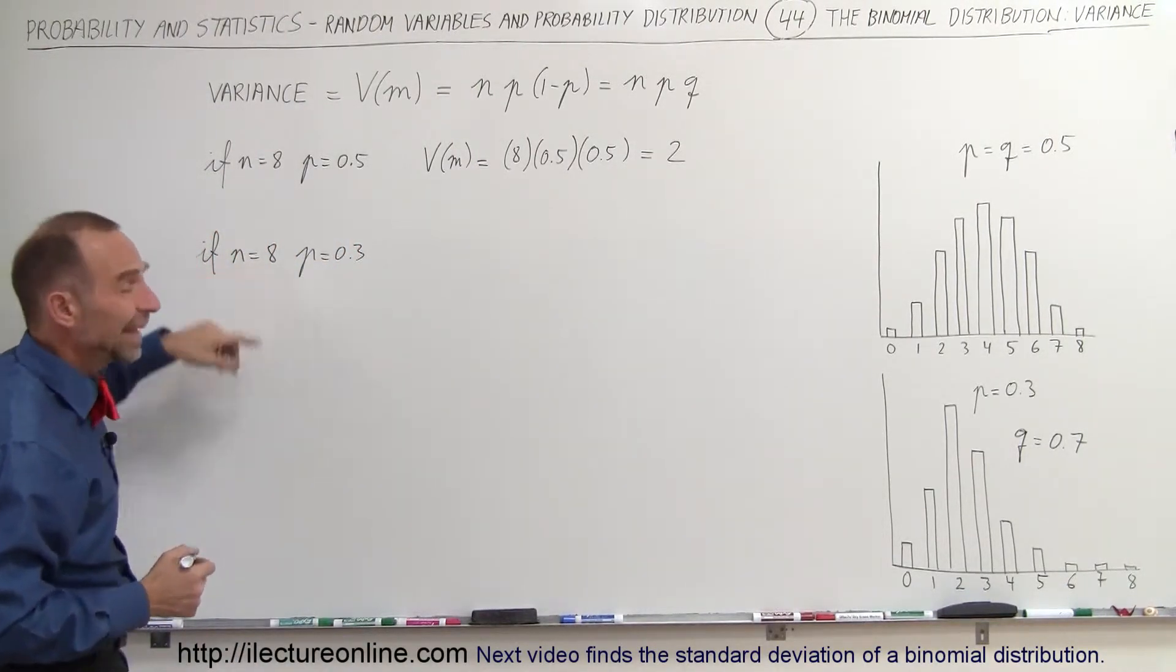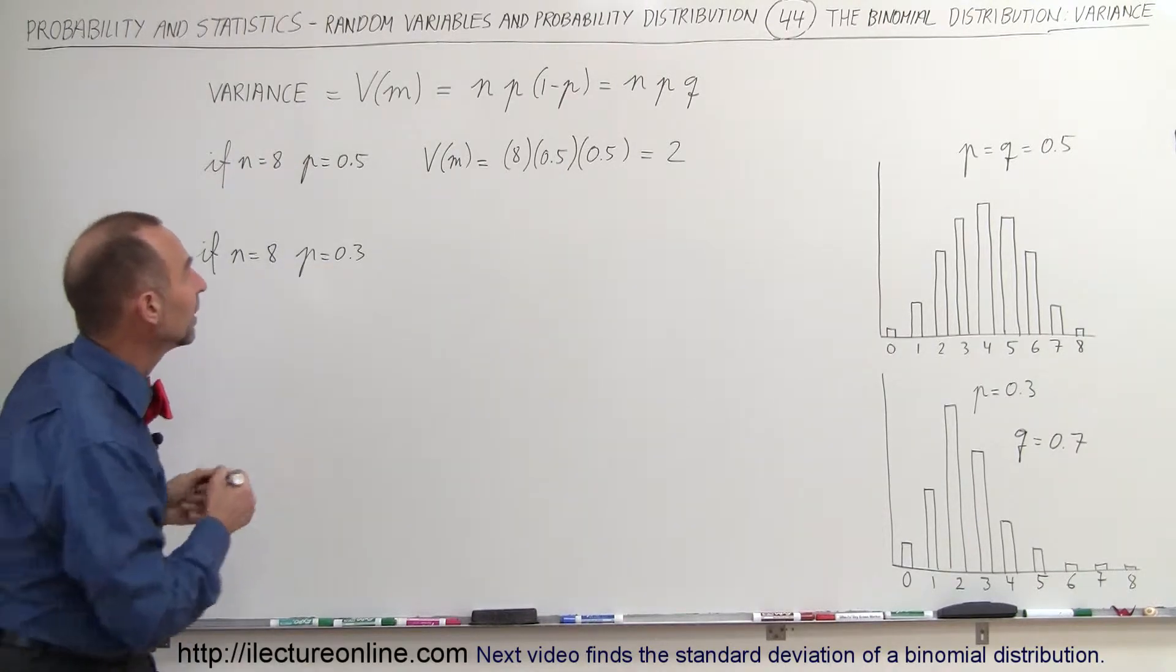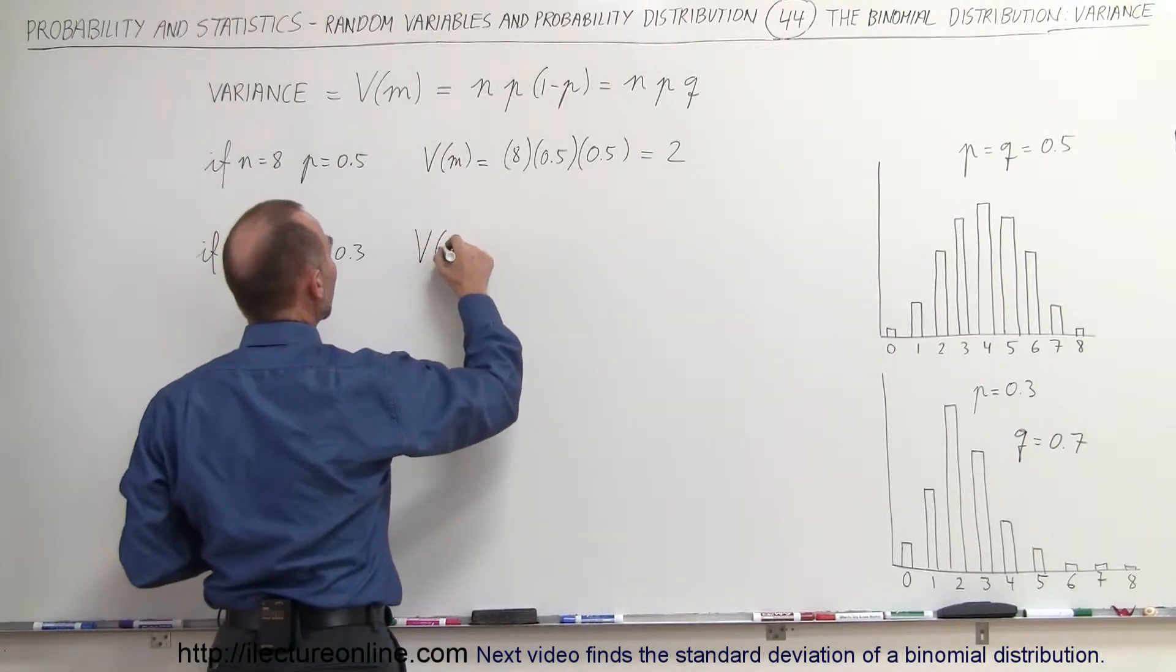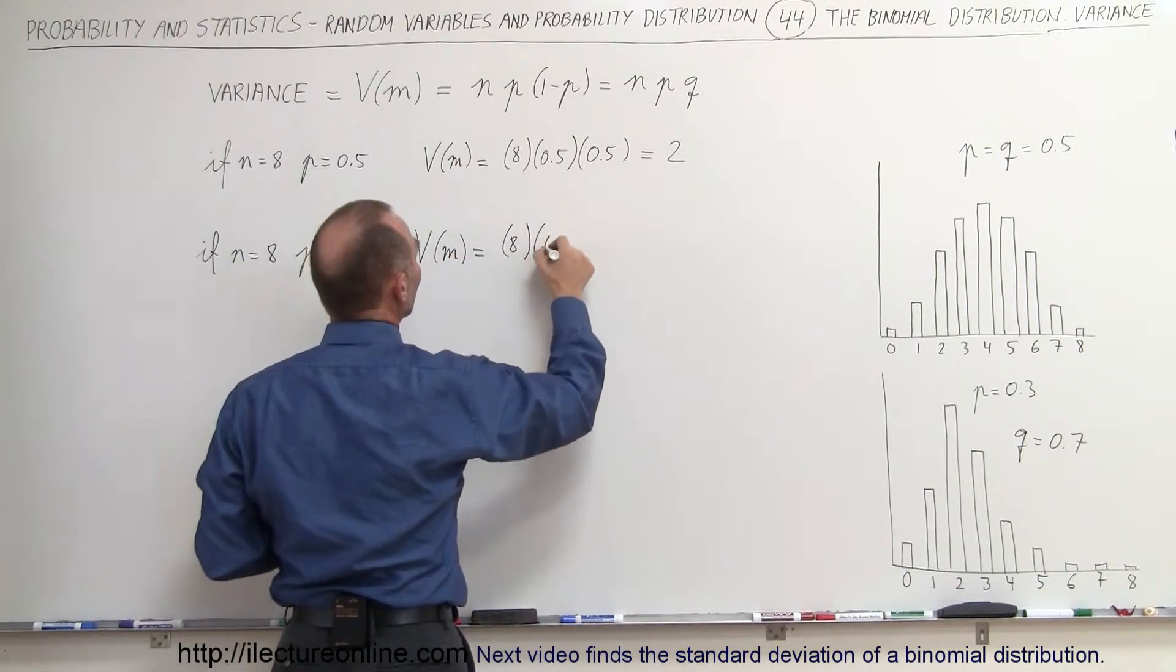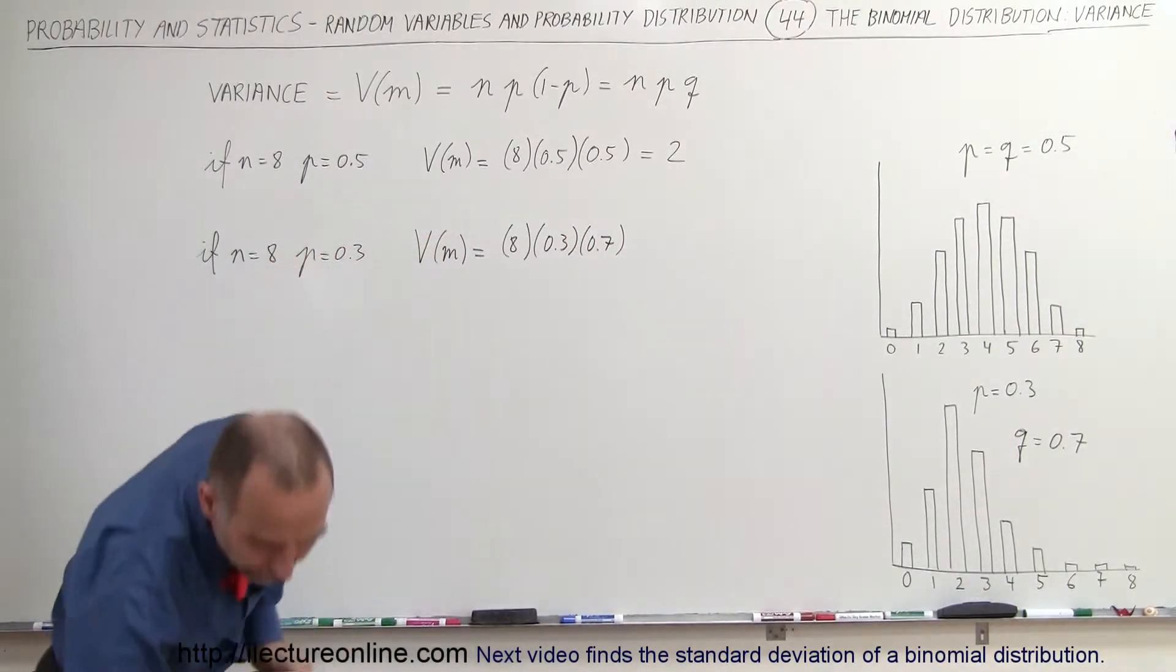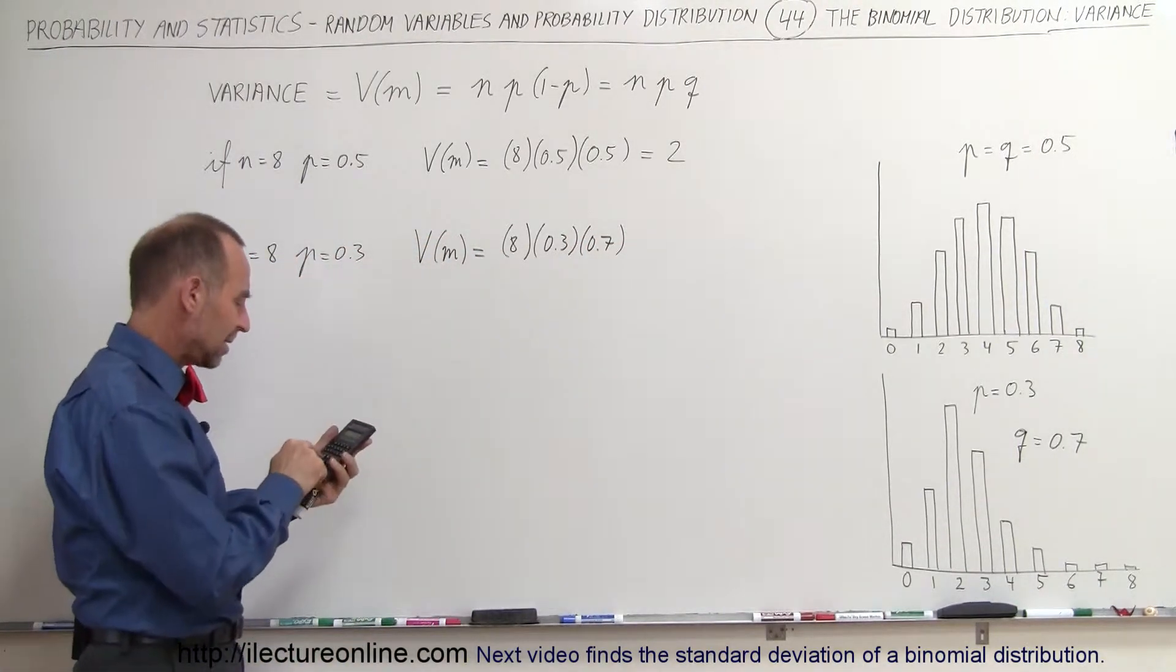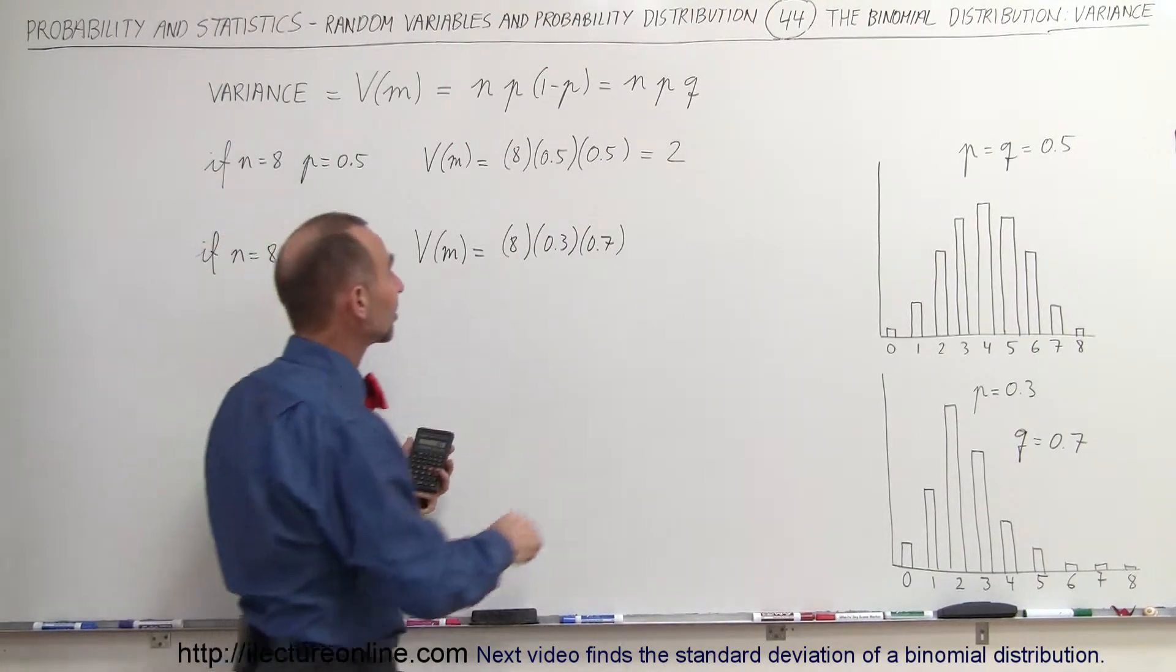In the case where n equals 8 and the probability of success is 0.3, the variance V sub m equals 8 times 0.3 times 0.7. Let's see what we get here on the calculator. So we have 8 times 0.3 times 0.7, and we get 1.68.